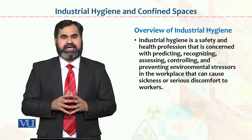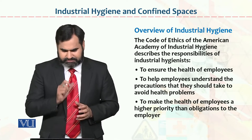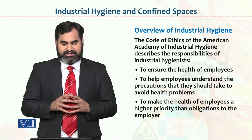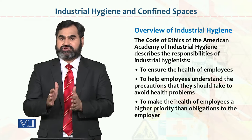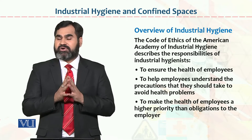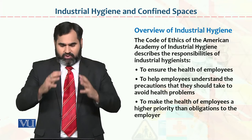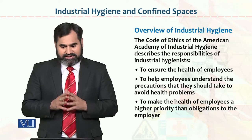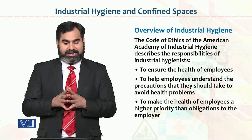جتنے بھی workers organization میں کام کر رہے ہیں، ان چیزوں کے حوالے سے assurance provide کرنا — اس عمل کو industrial hygiene بولتے ہیں. The code of ethics of American Academy of Industrial Hygiene describes the responsibilities of industrial hygienists. Industry نے لوگ appoint کئے ہوتے ہیں جن کی duty یہ ہوتی ہے کہ ان چیزوں کو assure کریں، انہیں industrial hygienists بولتے ہیں. پہلی ذمہ داری: to ensure the health of employees — چاہے first level management ہو، middle level ہو، top level ہو — ان کی health care سے related issues نہ ہوں. دوسری: to help employees understand the precaution they should take to avoid health problems.